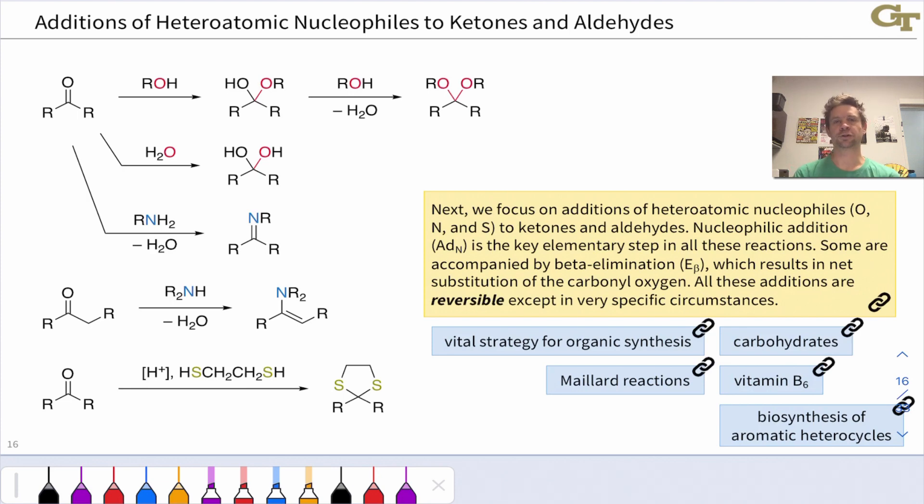These reactions are hugely important for a variety of reasons. Some of these products are useful in organic synthesis because they can mask the carbonyl group, and so for example, acetals and thioacetals are part of the strategy of multi-step organic synthesis of complex products, but these have a number of biochemical applications as well.